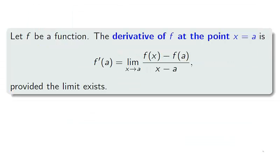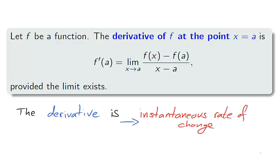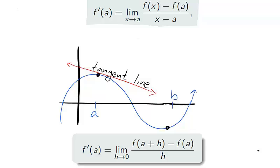As promised in the introduction, we conclude section 2.1 by defining the derivative of a function. Derivatives will often be denoted by f prime, and the derivative of a function f at the point x equals a is the instantaneous rate of change of f at x equals a. That is, the derivative is the slope of the tangent line. Often, we will use an alternative but equivalent formula for the derivative of a function at a point.